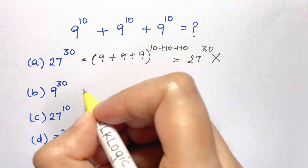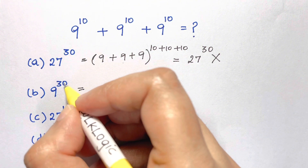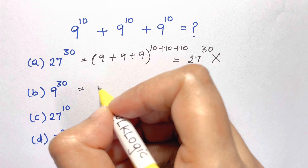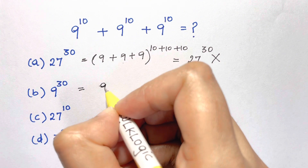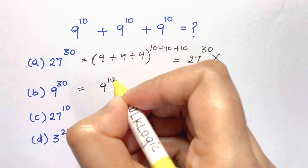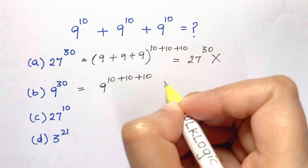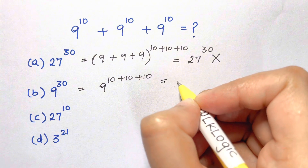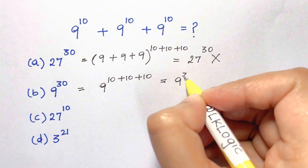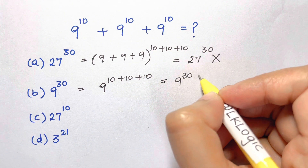Let's try the second one. Here you have one of the bases and the sum of all the powers — one base and the sum of all the powers: 10 plus 10 plus 10, which equals 9 to the power of 30. This is also wrong.